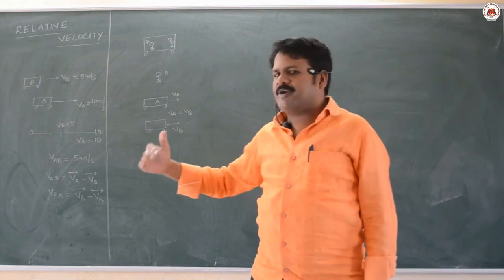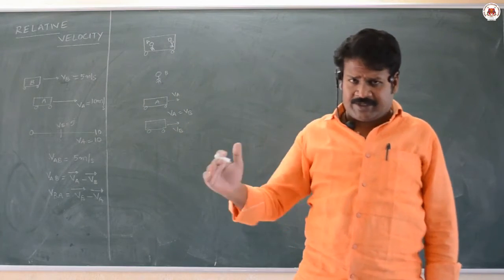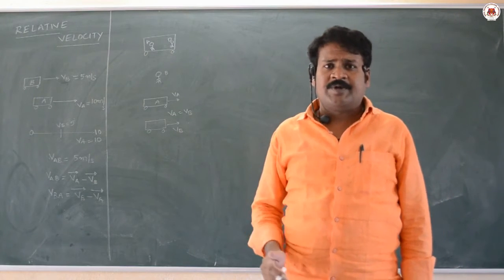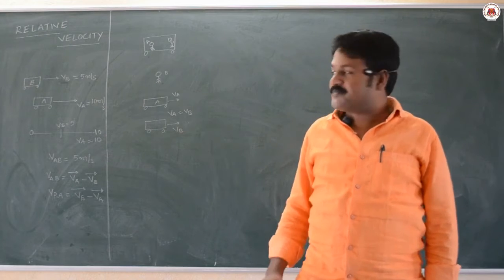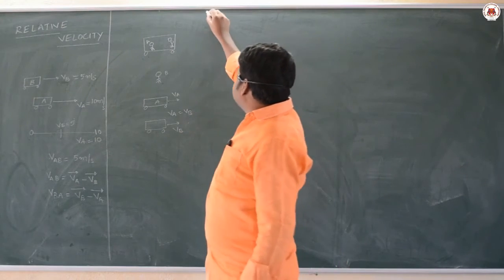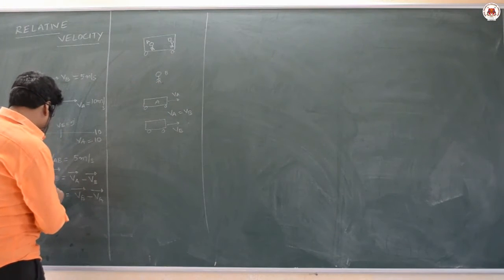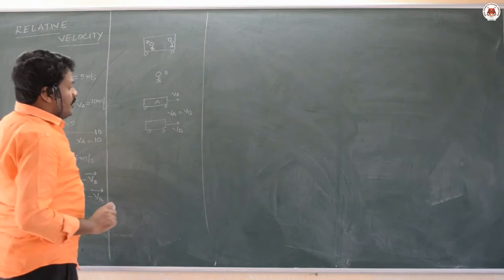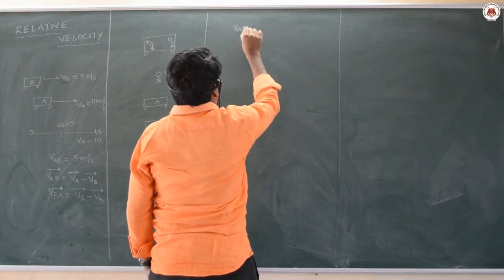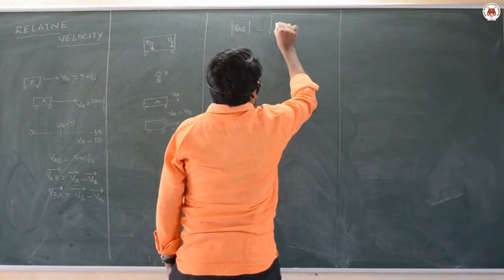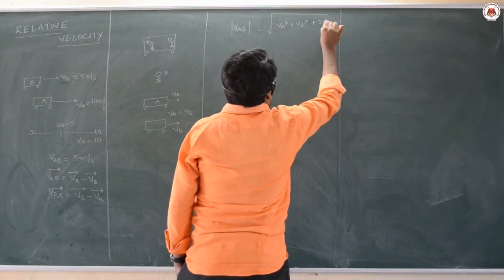If I say the velocity of a body is 100 meters per second, I am comparing from a fixed reference point — the velocity of the ground taken as rest. The magnitude of the relative velocity V_ab is given by the formula: |V_ab| = √(V_a² + V_b² + 2·V_a·V_b·cosθ), where θ is the angle between the two velocity vectors.